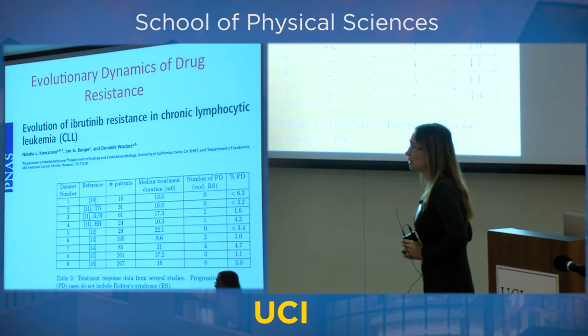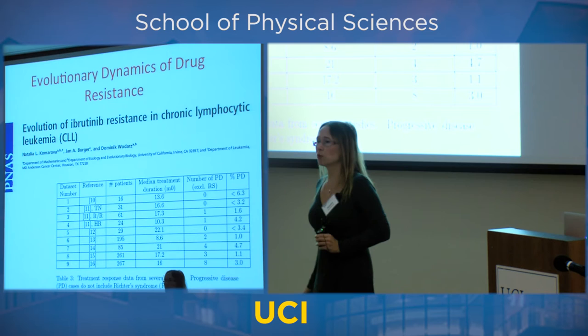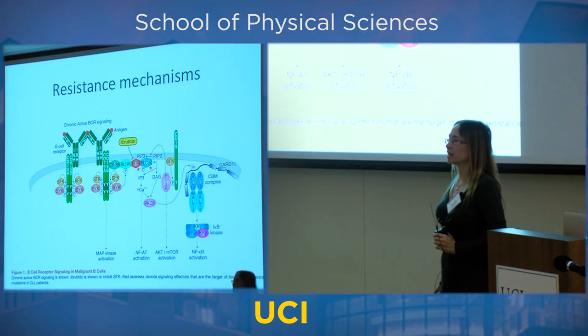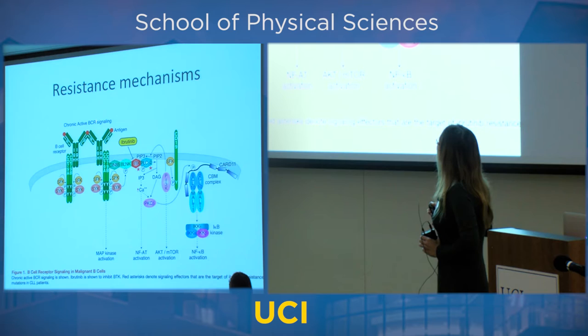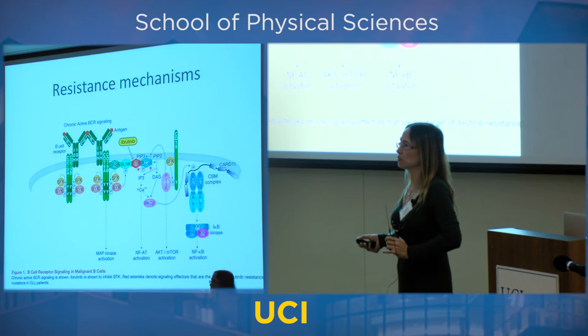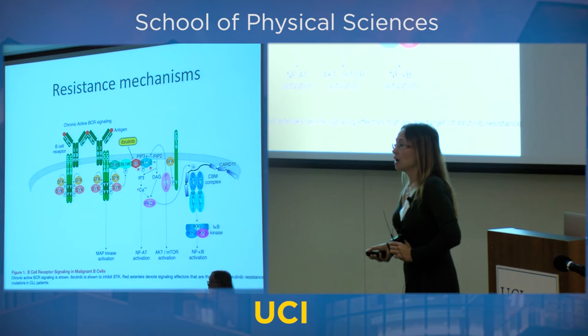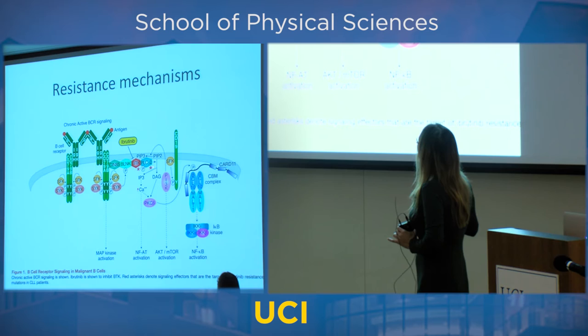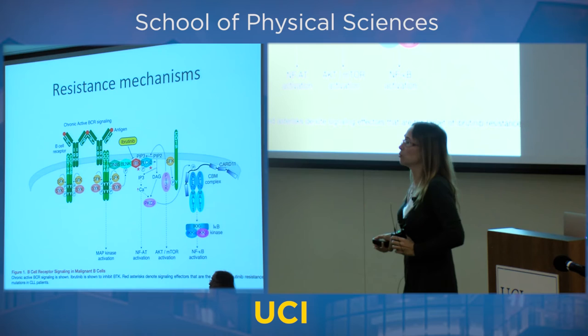Resistance has been studied biologically. Ibrutinib binds to BTK, which allows the cell to function. One type of resistance mutation modifies BTK so the drug cannot bind to it anymore — making it ineffective. A second mutation is elsewhere but allows the cell to survive without BTK. So both mutations prevent the drug from working in two very different ways.